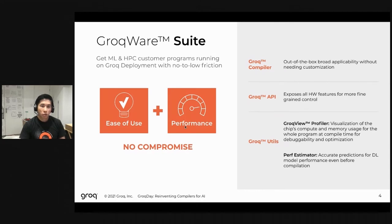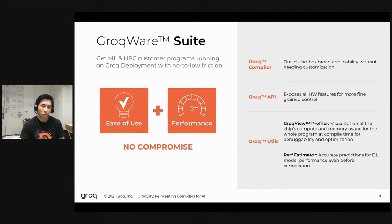Here I'm showing the three key components that Groq delivers in its GroqWare suite. First, the Groq compiler, which takes standardized models from frameworks like PyTorch or TensorFlow and compiles them down onto the Groq chip in a fully automated fashion. Additionally, we provide the Groq API — a bare metal programming model that allows fine-grained control and customization of our hardware. Paired with this are Groq utils, which allow performance profiling and debugging, used in conjunction with the Groq API and compiler.